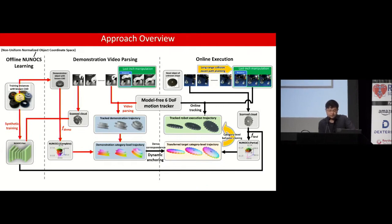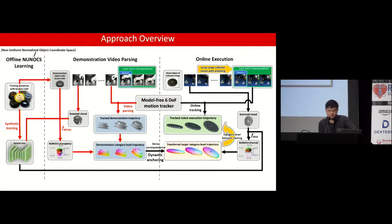Here's our approach overview, divided into three parts. First, offline NUNOX learning learns a category-level representation. NUNOX is an abbreviation for Non-Uniform Normalized Object Coordinate Space — it learns how to associate different instances in the same canonical space of a category. Second is the demonstration video parsing, where we use a 6D-pose tracker that doesn't require instance or category-level models to extract motions from the single visual demonstration. We then convert this trajectory into a category-level canonical space using the NUNOX representation. During online testing, our goal is to closely follow the trajectory using closed-loop feedback from the visual tracker.